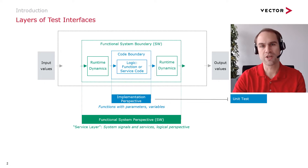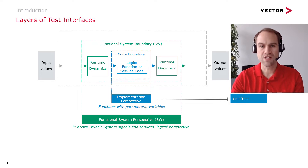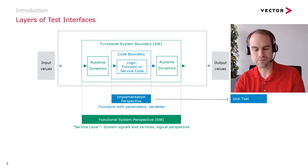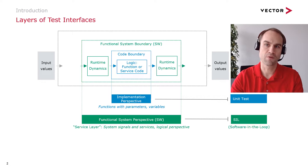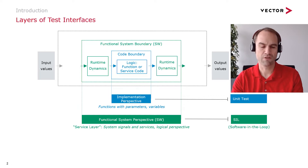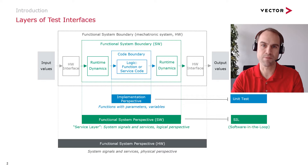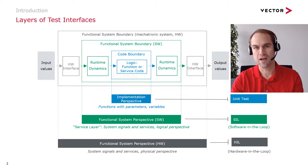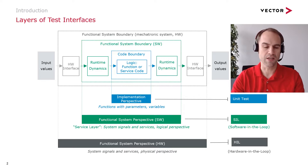If we go one level up we come to the functional system boundary at the software level. In this case we have the integration of the individual components, the individual objects and the logic, but furthermore we have the runtime dynamics of your system, which means we have a behavior of your system over time. This is the level where we say we test at the SIL level — the software-in-the-loop level. And finally at the outermost level we have the functional system boundary but now we include the hardware, and this is the domain of the classical HIL tests where you really have the final integrated target device sitting on your desk and tested with dedicated test equipment.